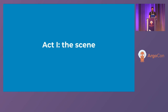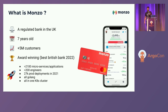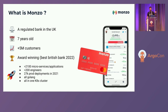A little bit of context: what is Monzo? It's a regulated bank in the UK, seven years old, with more than five million customers. It won best British bank this year. It's a mobile-only banking app, and if you've been in the UK you've probably seen those very flashy hot coral cards that we're famous for.